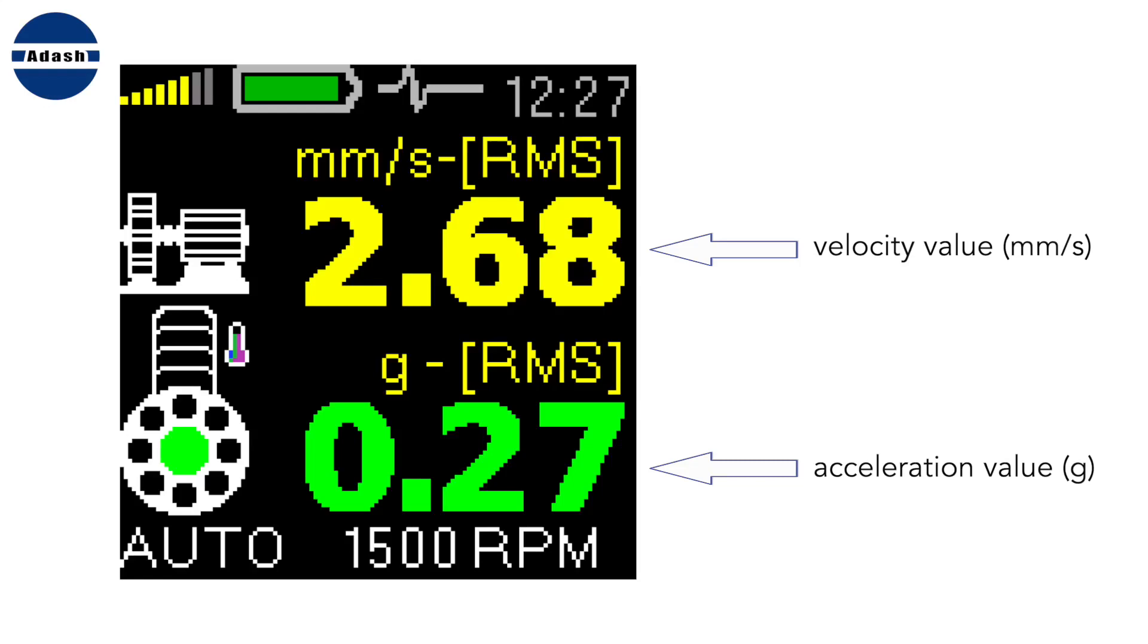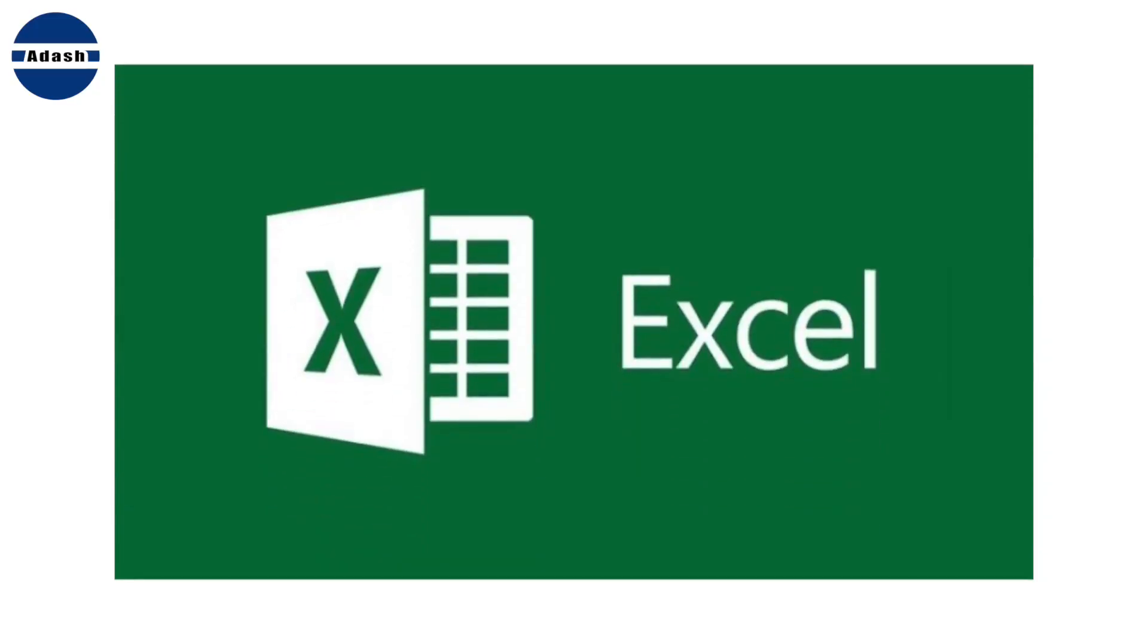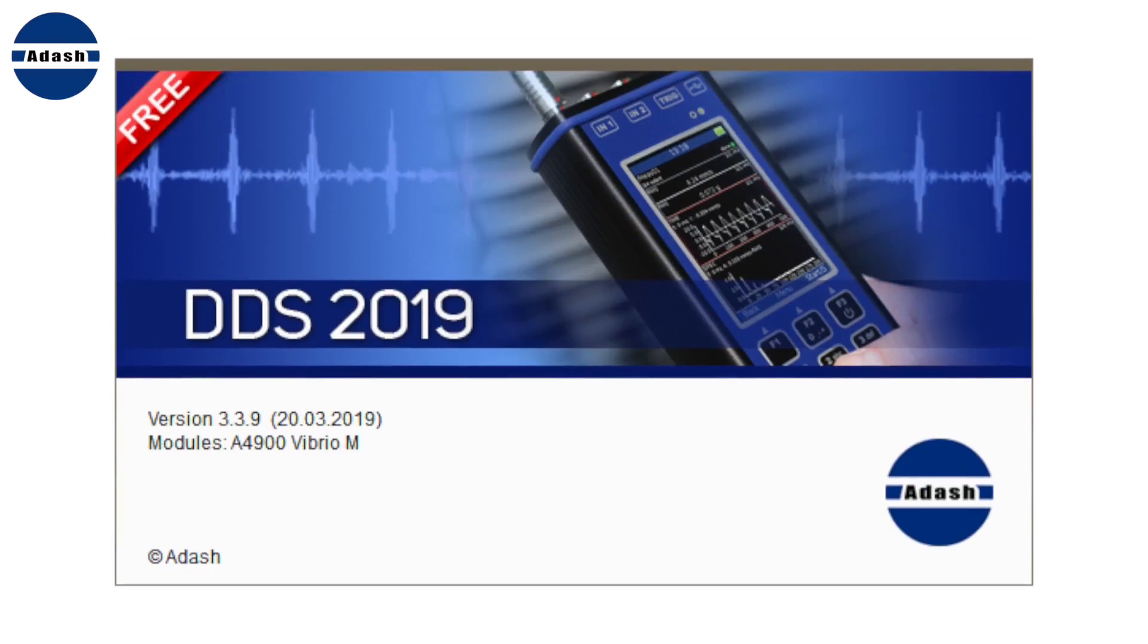The acceleration value is measured from 500 hertz to 16 kilohertz. It contains information about roller bearing condition. The Adash Vibrio displays both values on first screen. Write the values on paper table or use Microsoft Excel or use the Adash DDS software which is free for Vibrio readings. The DDS software you can download from Adash website.